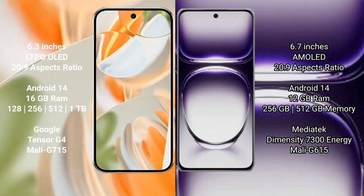Both the Google Pixel 9 Pro and the Oppo Reno 12 run on the Android 14 operating system.